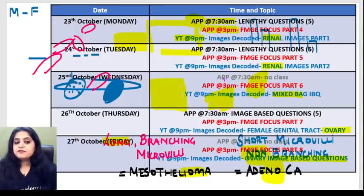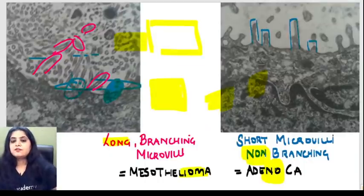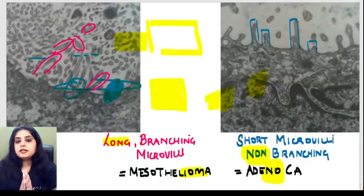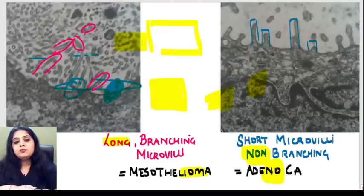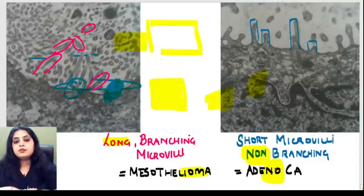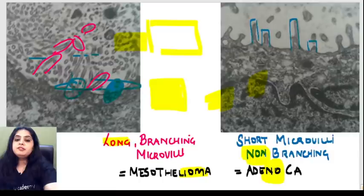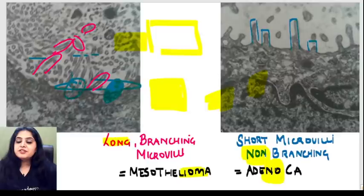Respiratory path is done. Apologies for the last technical issue. We'll be meeting tomorrow for a special class on the Unacademy app at 2 o'clock in the afternoon. Then back to the Monday to Friday schedule: trio classes at morning 7:30, afternoon 3, and evening 9 o'clock. The next topic in Images Decoded will be two classes of renal pathology. Thank you so much for joining. Have a great weekend and see you Monday.